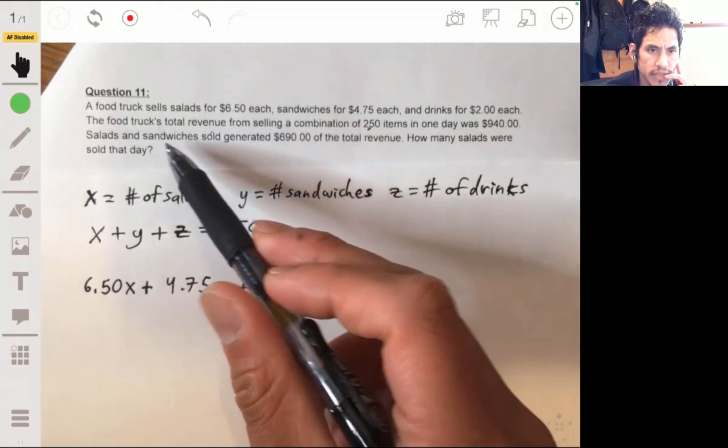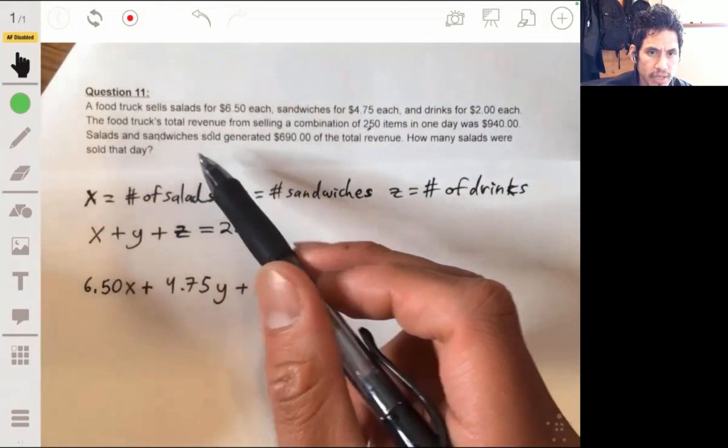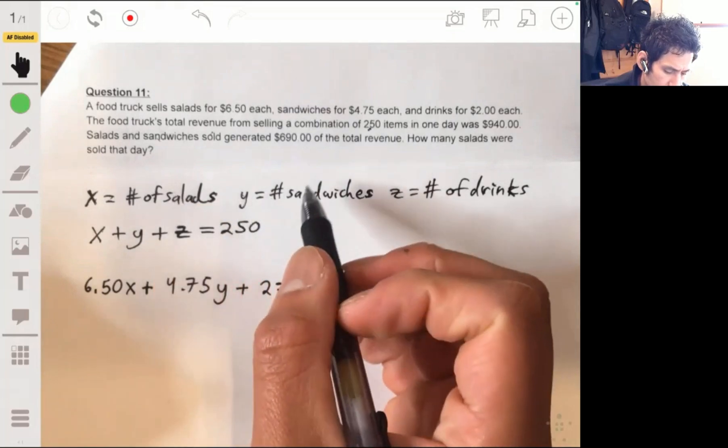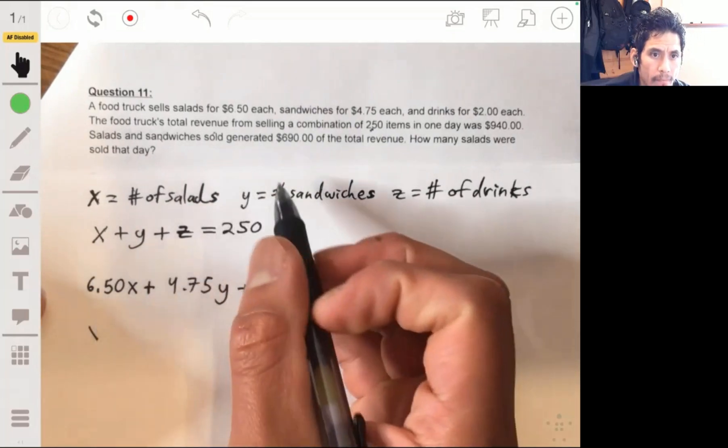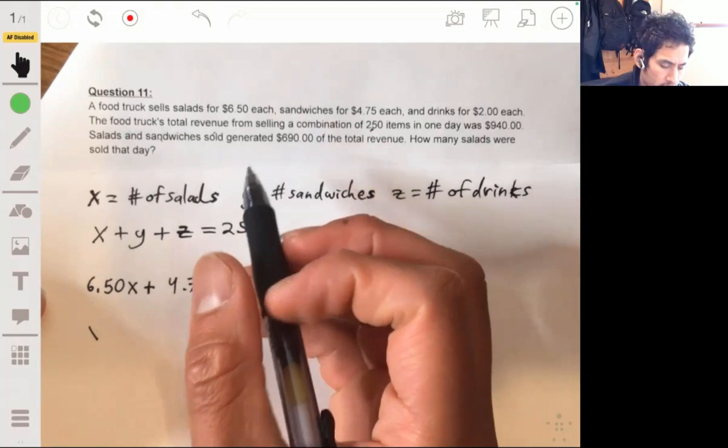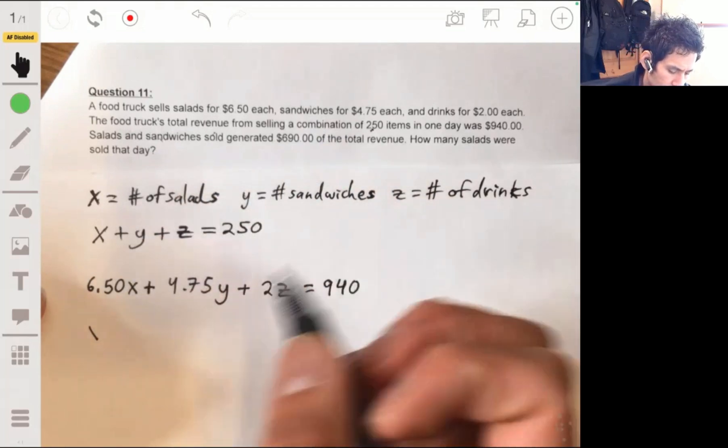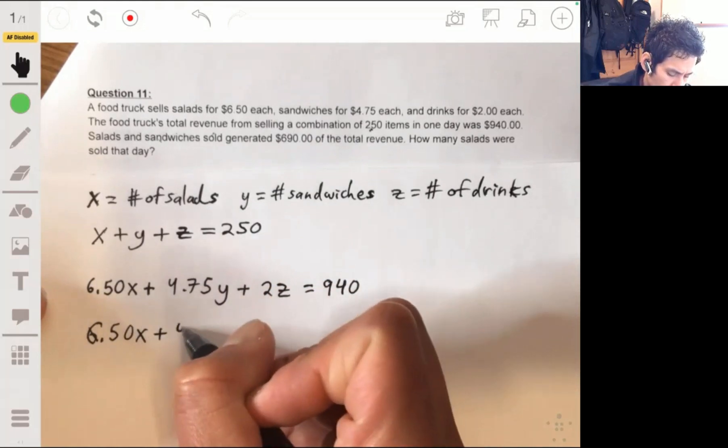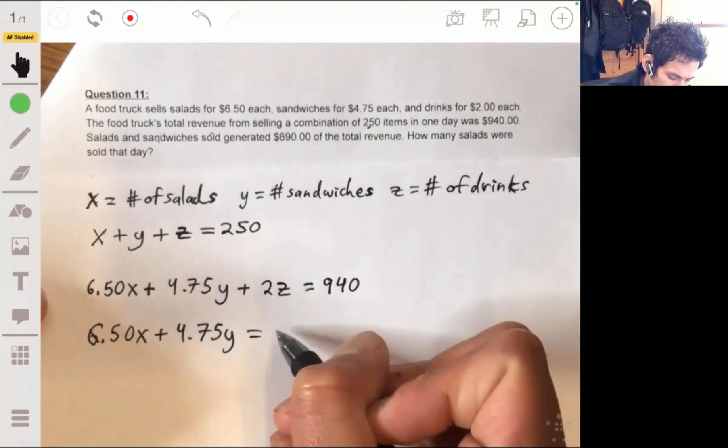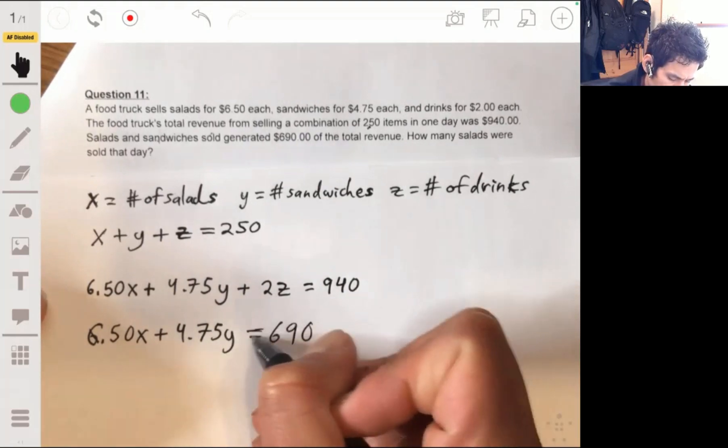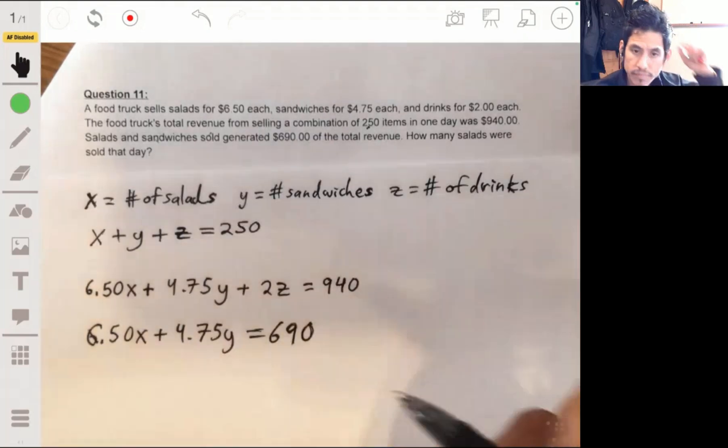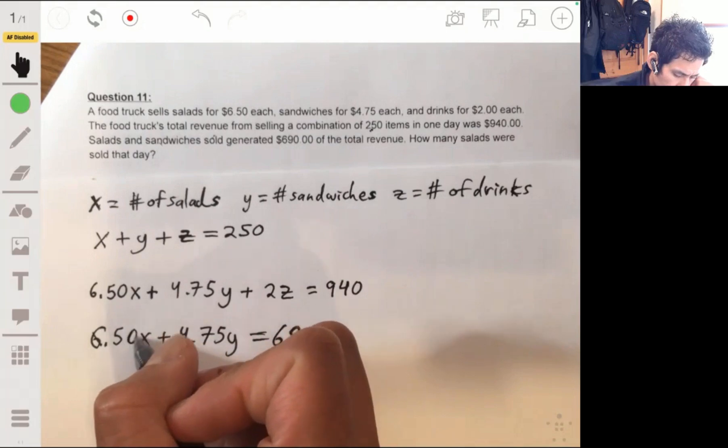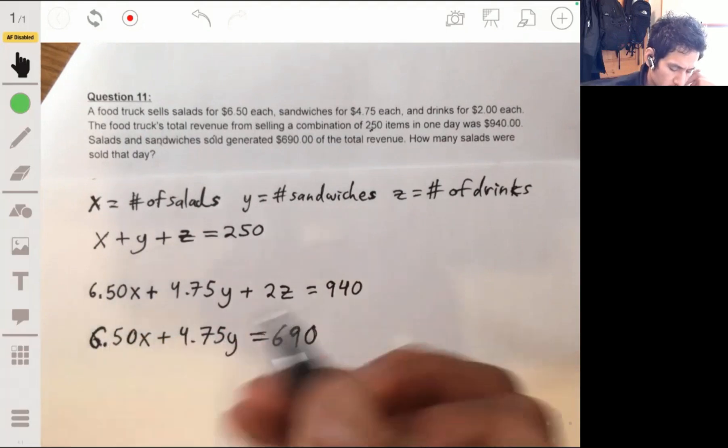Okay, so then sandwiches and salads by themselves generated $690 in total revenue. So sandwiches and salads, so then we would have 6.5X plus 4.75Y equals $690. You don't have to put 0.50, you can put 6.5, that's fine.